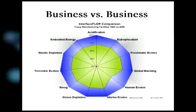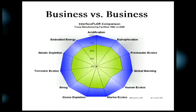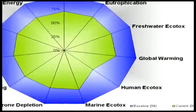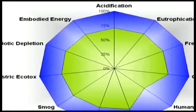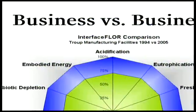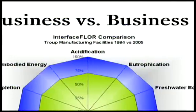Here at Interface Floor, we have devised a system that addresses both. Every decision that we make — a decision on a business unit versus a business unit, one year versus another year, a process versus a process, a material versus a material, or a product versus a product — any of those choices can be evaluated through this life cycle footprint mechanism that we've set up.